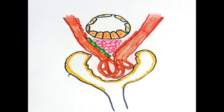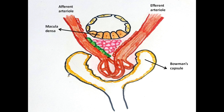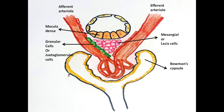Let's have a closer look at the juxtaglomerular apparatus. This is the Bowman's capsule. This is the afferent arteriole and this is the efferent arteriole. This is the macula densa cells of the distal tubule — a specialized group of epithelial cells in the distal tubule that comes in close contact with the afferent and efferent arteriole. This is the granular cells or juxtaglomerular cells, involved with secretion of renin. This is the extraglomerular mesangial cells or lacis cells; the exact function of these cells is unknown.